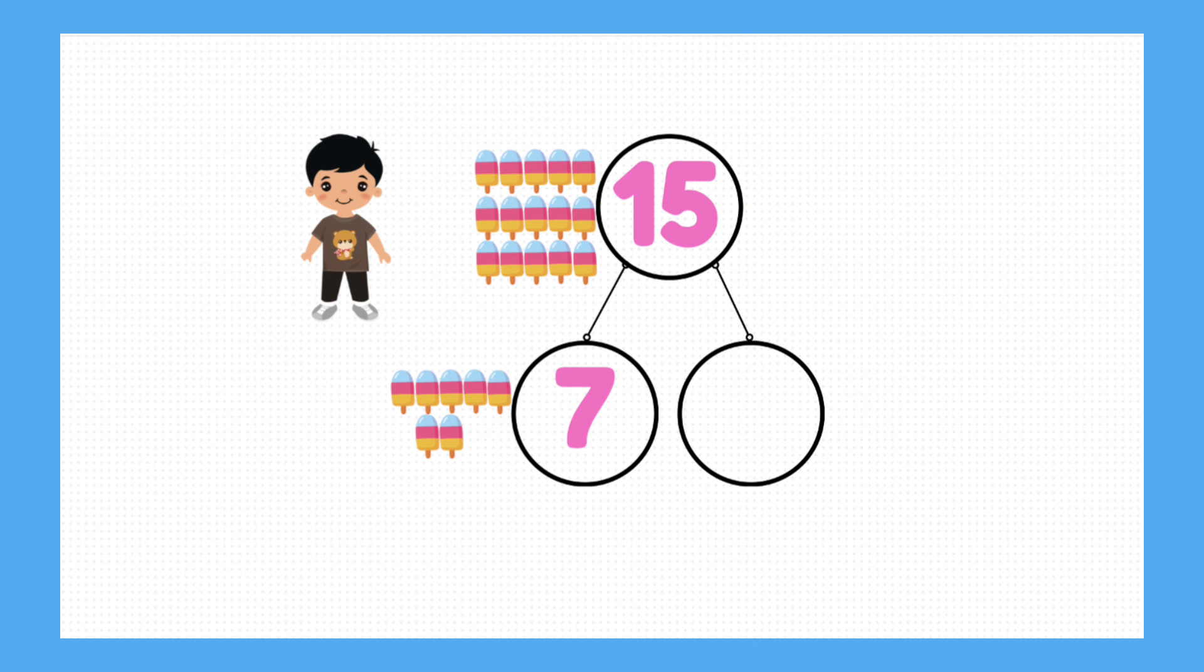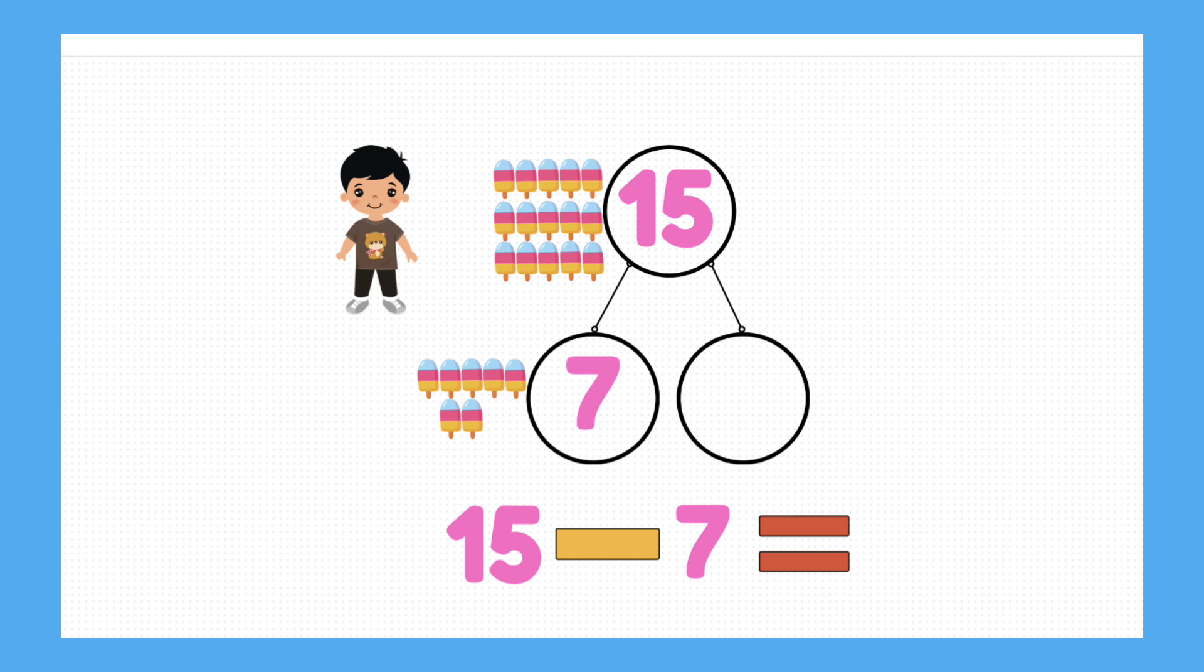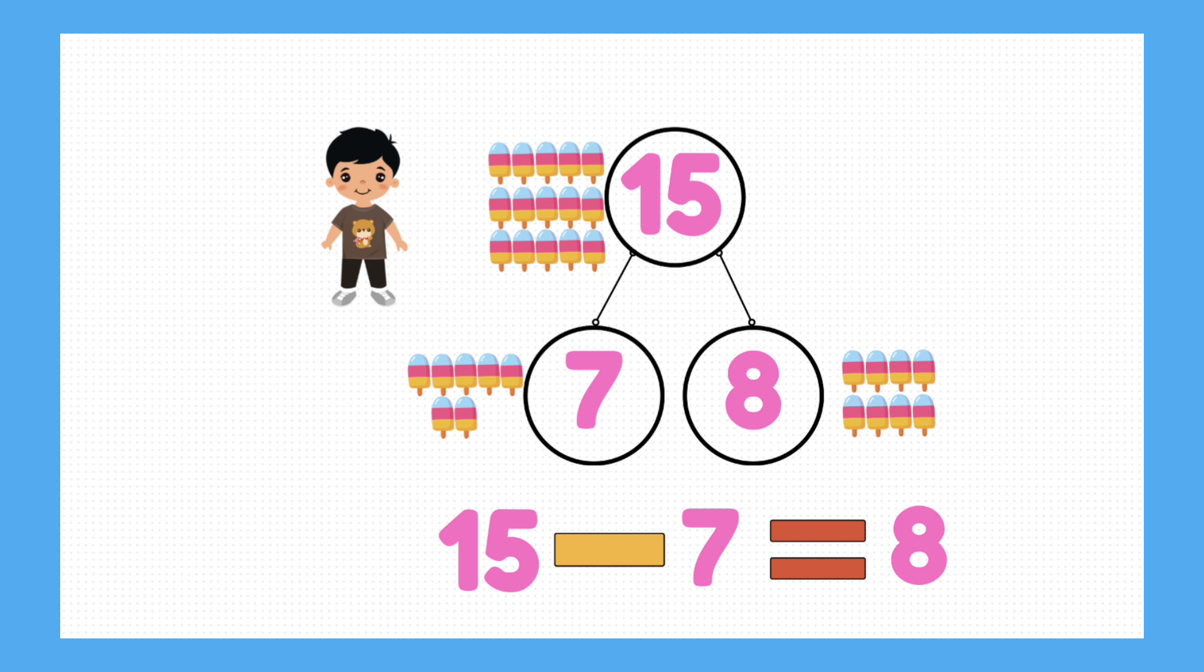Question number 4. Aidan has 15 ice lollies. He gives 7 of them to his friends. How many ice lollies does Aidan have left? Now the whole was made up of 15. We take away 7. The answer we're left with should have been 8.